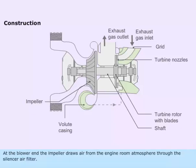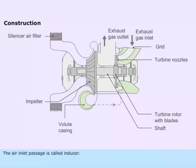At the blower end, the impeller draws air from the engine room atmosphere through the silencer air filter. The air inlet passage is called inducer. It guides the air smoothly to the impeller.